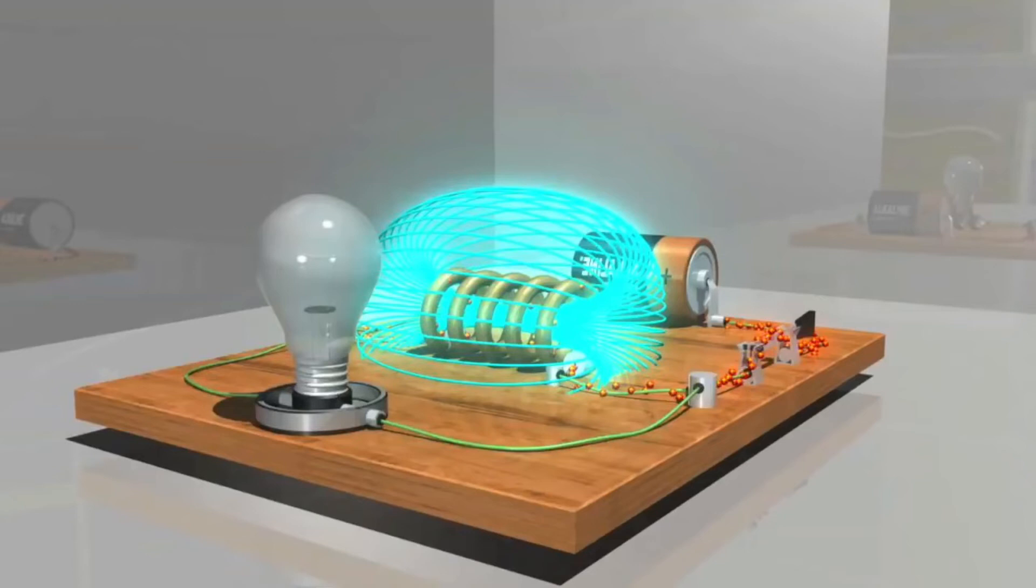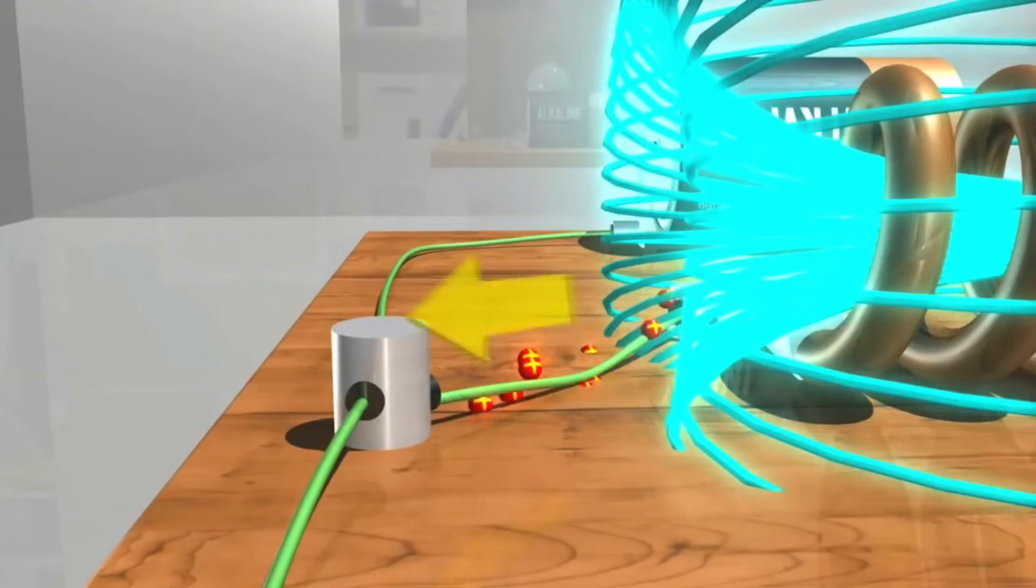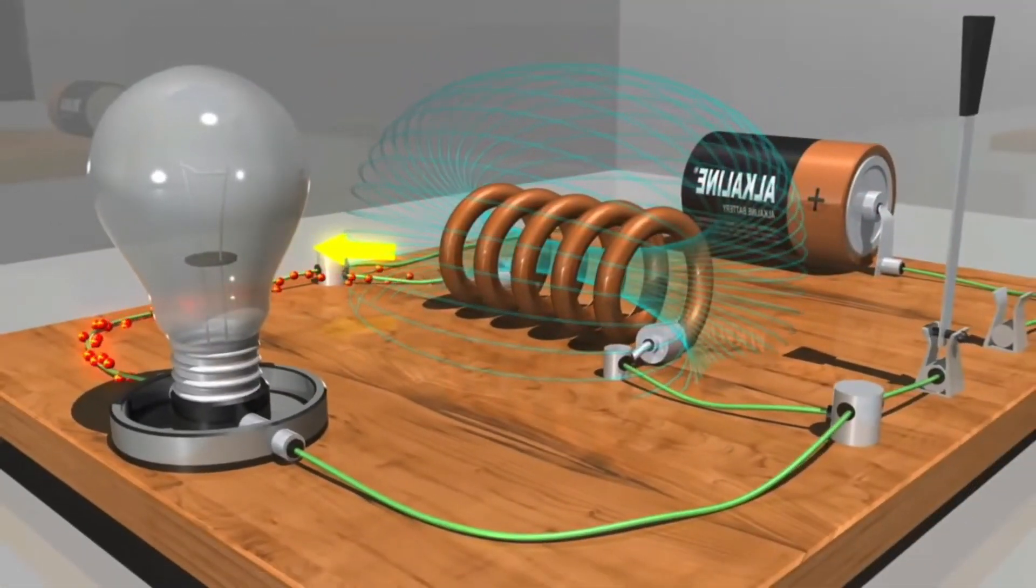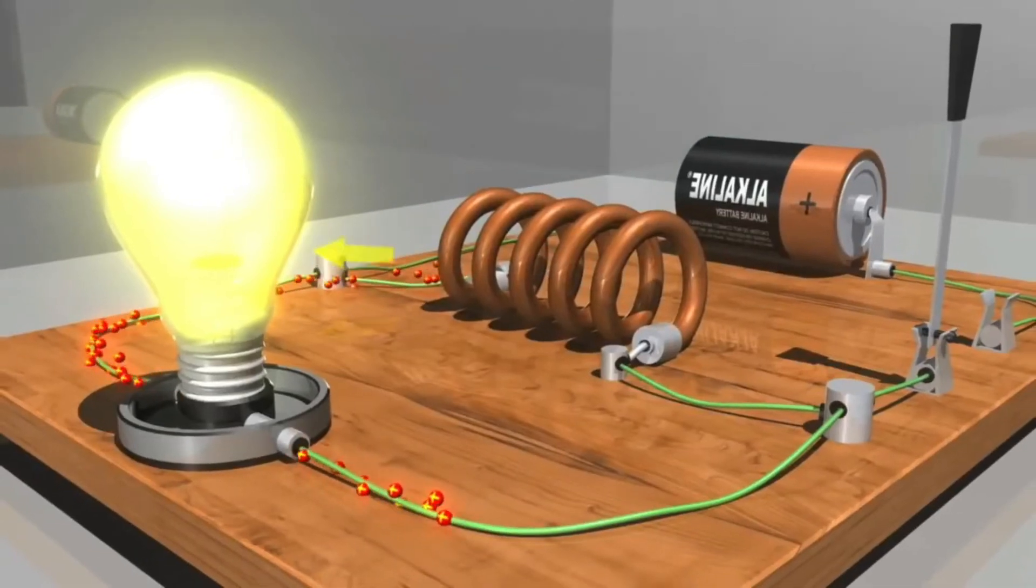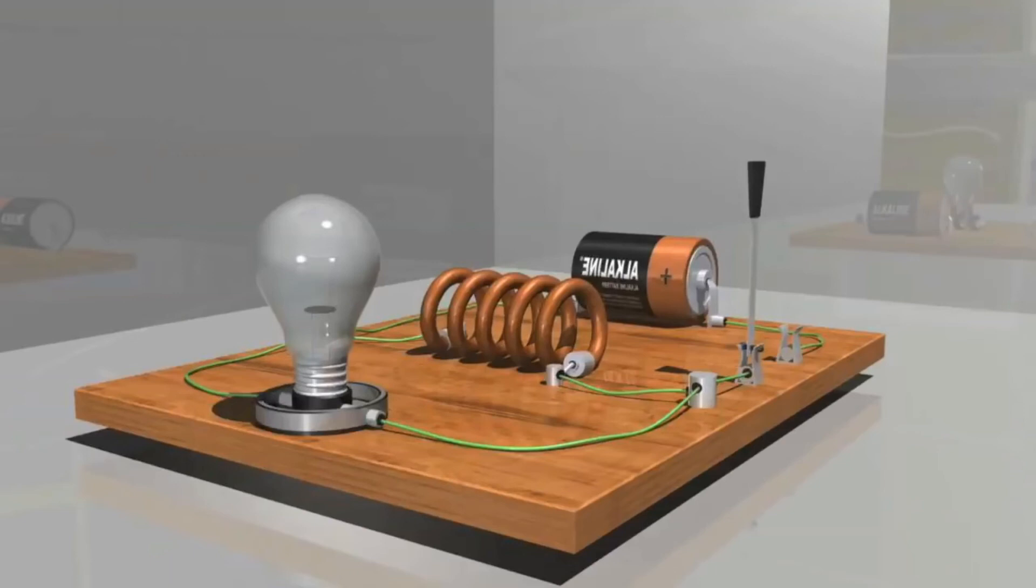The same phenomenon occurs when the magnetic field is shrinking, which happens when we open the switch and stop current flow from the battery. Once again, the back EMF opposes the change that created it. In this case, the change is the cessation of current. So opposing this change, the back EMF wants to maintain the current, which flows once again to the bulb.